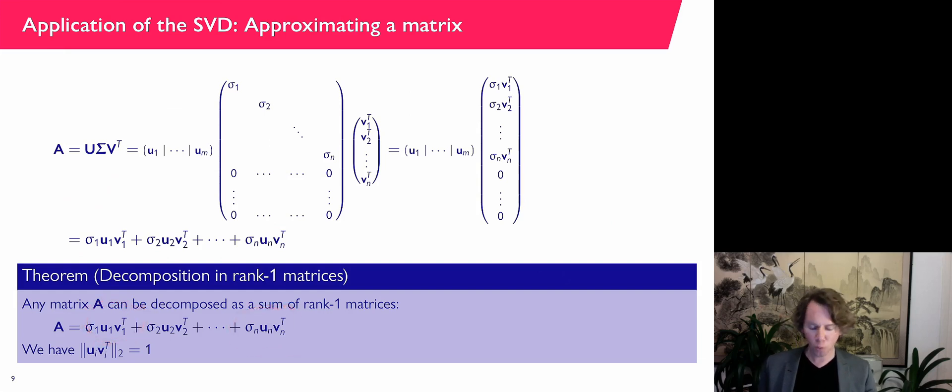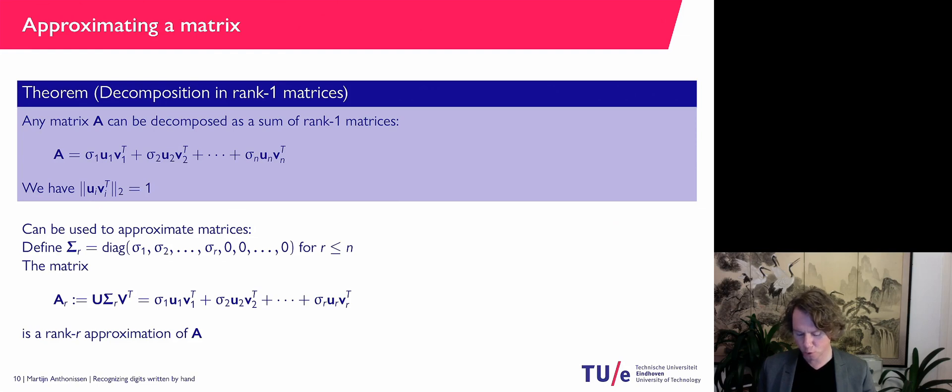Now that gives a way to capture or to truncate or to approximate, because what we can do is, instead of this whole sum with all n terms, we can take the first little r one, so we're going to take the first little r terms.